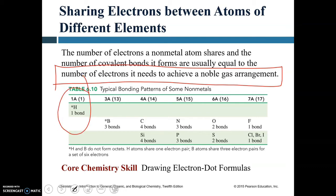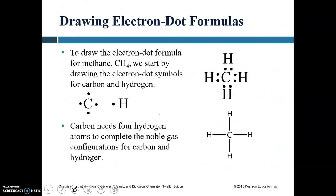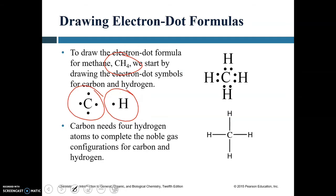Fluorine, chlorine, bromine, and iodine need one more electron for an octet, so they form one bond. Oxygen and sulfur need two electrons and form two bonds. Nitrogen and phosphorus need three and form three bonds. Carbon and silicon need four and form four bonds. For example, methane: carbon has four valence electrons and four hydrogens, each needing one electron. Carbon needs four hydrogen atoms to complete its noble gas configuration, giving the CH₄ structure.